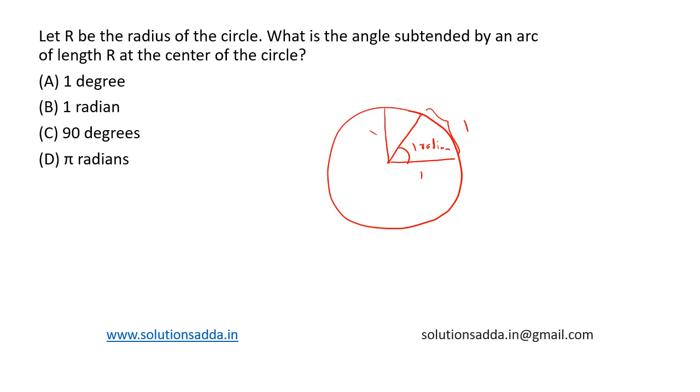Based on the options, option B — one radian — is the right choice.